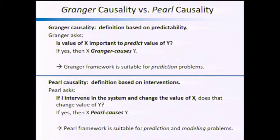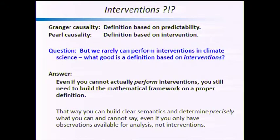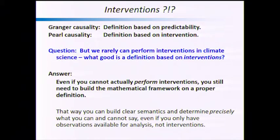Some of you may say: that's all good and fine, but in climate science I can't really do interventions in most cases. If I have a simulation, great, but we really can't perform interventions in climate science. So what good is a definition based on intervention if I can't use it anyway? The key answer is: even if you can't do interventions, you still have to build the mathematical framework based on a proper definition. Even with only observations, that definition is going to help you figure out what you can and cannot say. So if you truly care about causality, you should use Pearl's framework. If, on the other hand, you only care about prediction, you're perfectly fine with Granger causality.